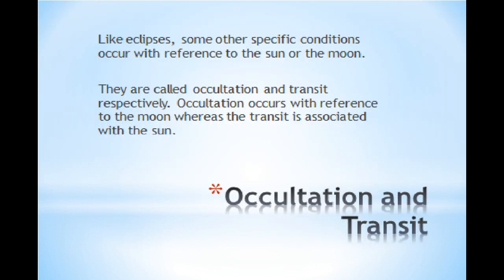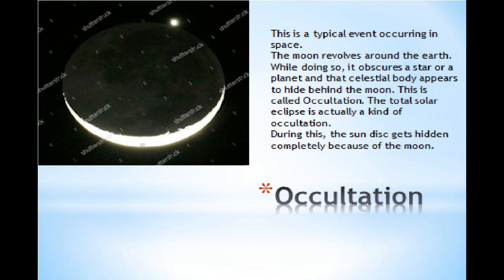Like eclipses, some other specific conditions occur with reference to the sun or the moon. They are called occultation and transit, respectively. Occultation occurs with reference to the moon whereas transit is associated with the sun. Occultation is a typical event occurring in space. The reason behind is because the moon is revolving around the earth. And while doing so, revolving around the earth, it obscures or it hides a star or a planet. And that celestial body appears to hide behind the moon. And this is called occultation. The total solar eclipse is actually a kind of occultation. During this, the sun disk gets hidden completely because of the moon.